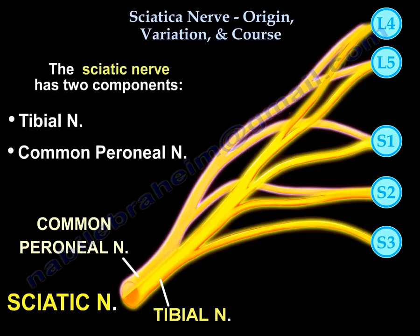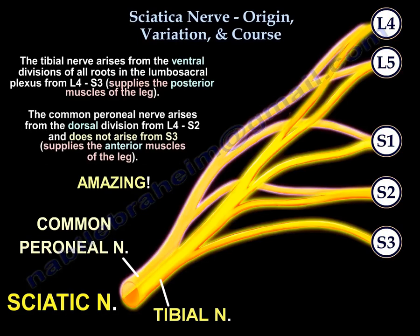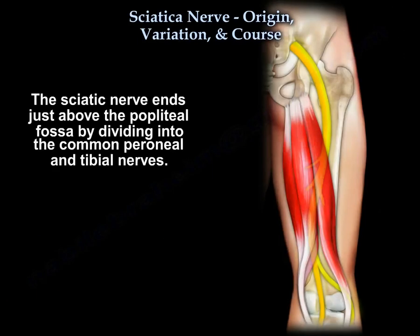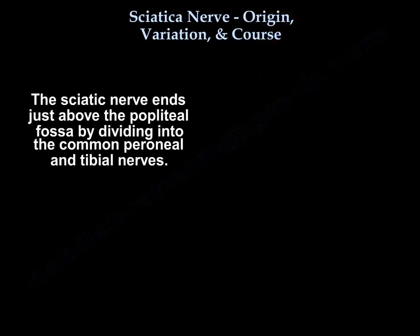The sciatic nerve has two components: the tibial nerve and the common peroneal nerve. The tibial nerve arises from the ventral divisions of all roots from L4 to S3, and the common peroneal nerve arises from the dorsal divisions of L4 to S2 — it does not arise from S3. The nerve ends just above the popliteal fossa by dividing into these two components.